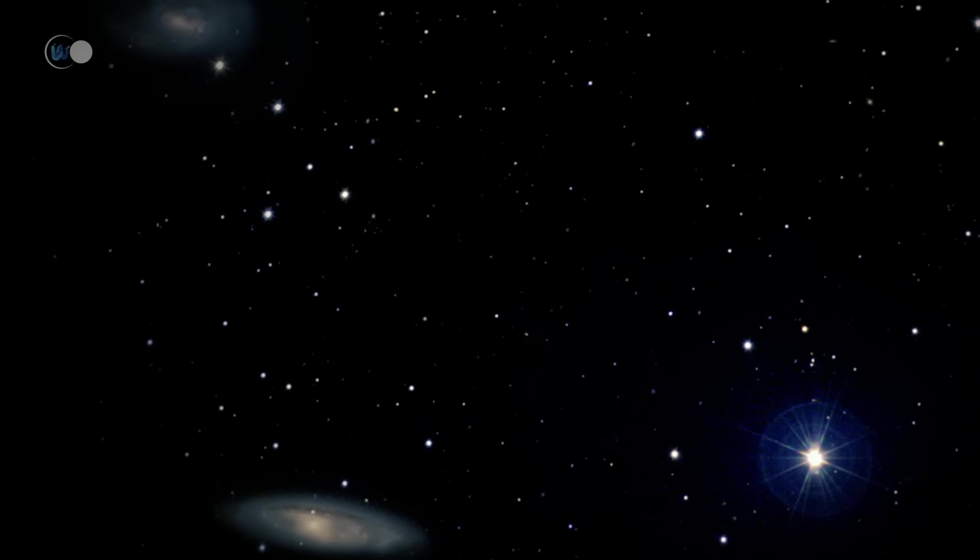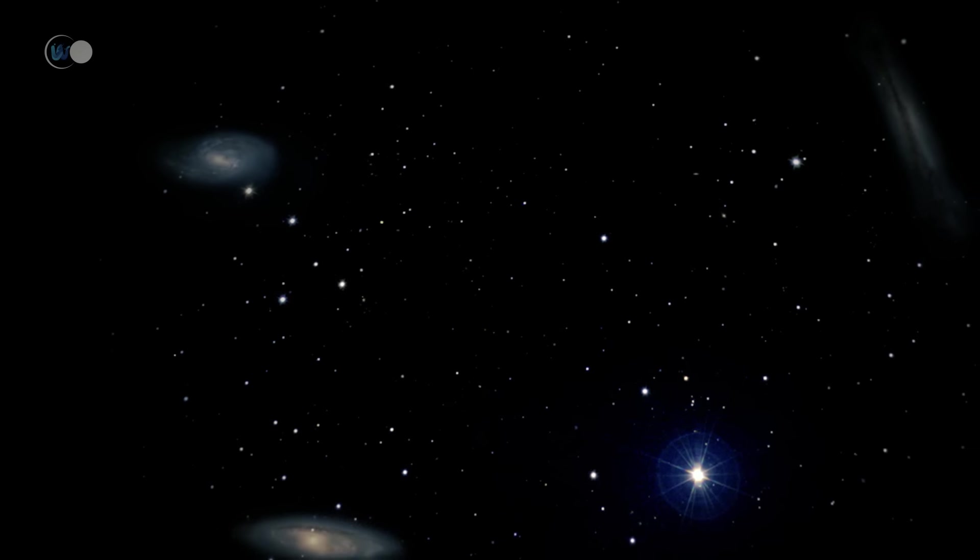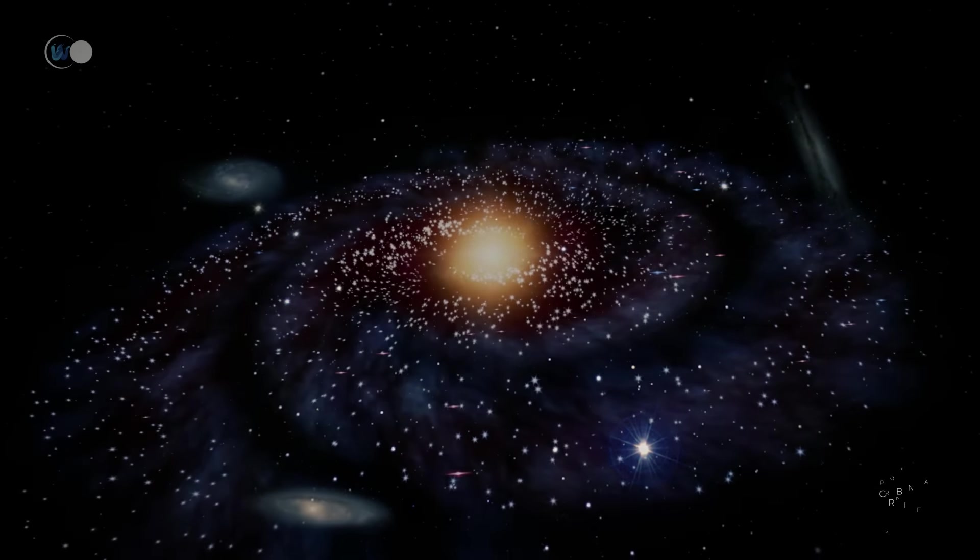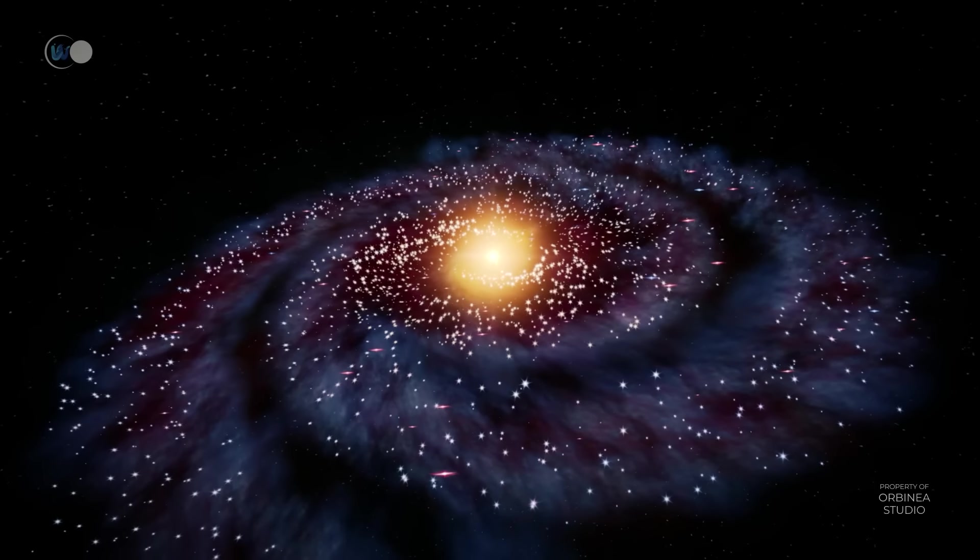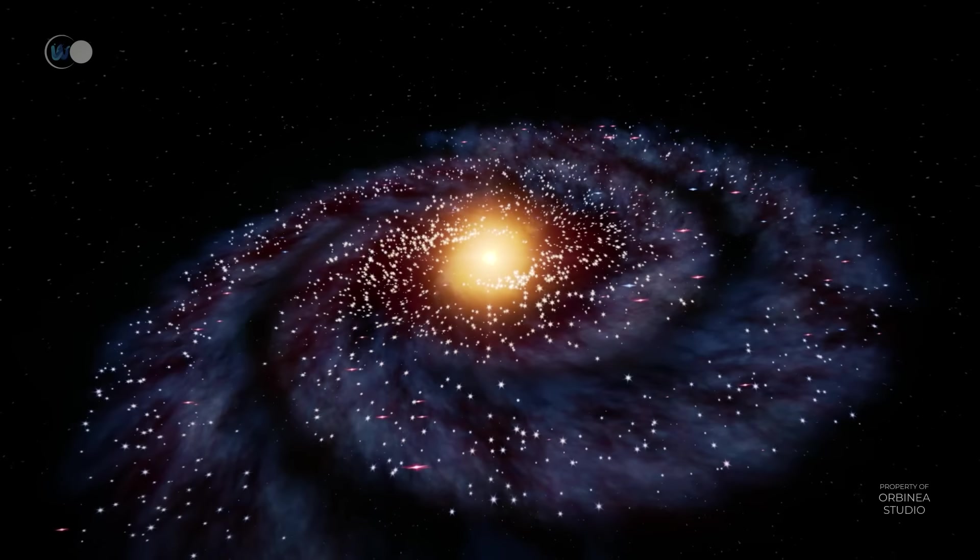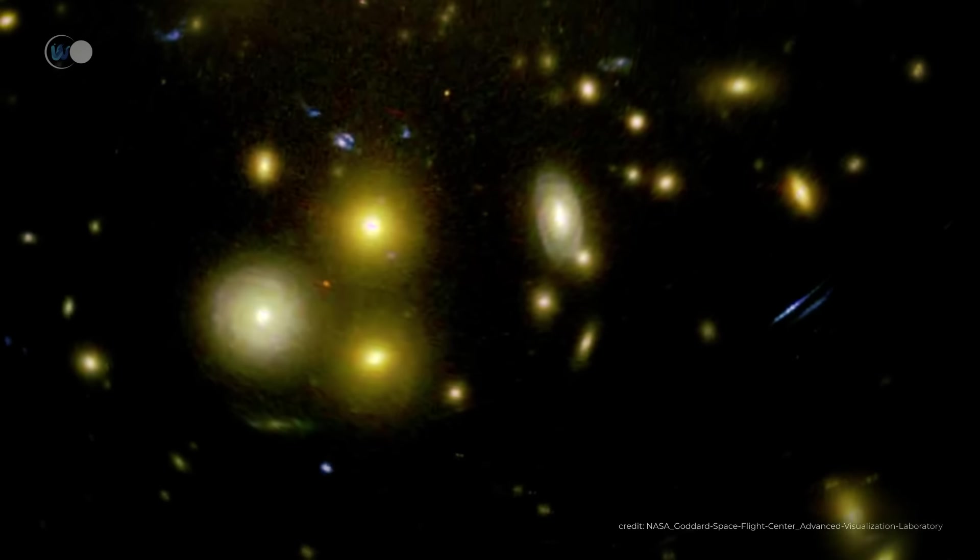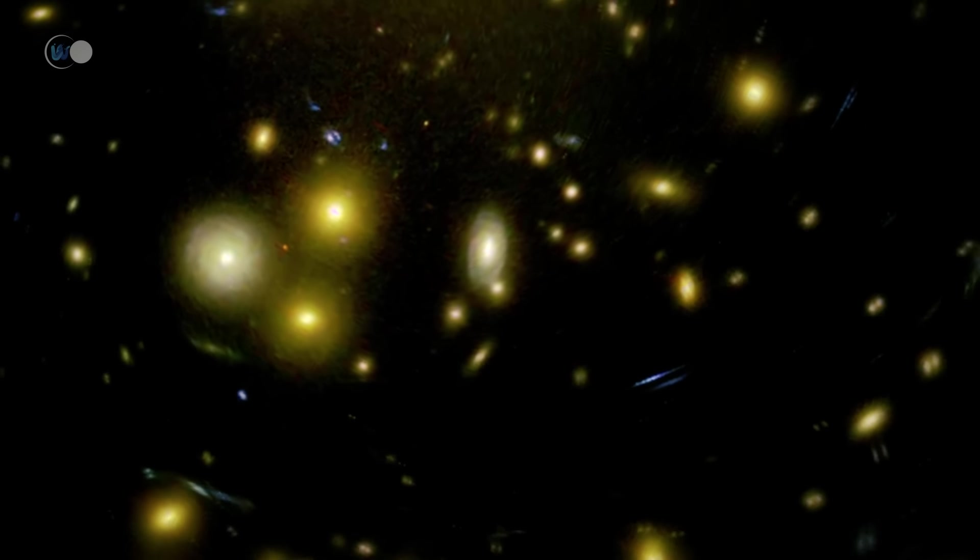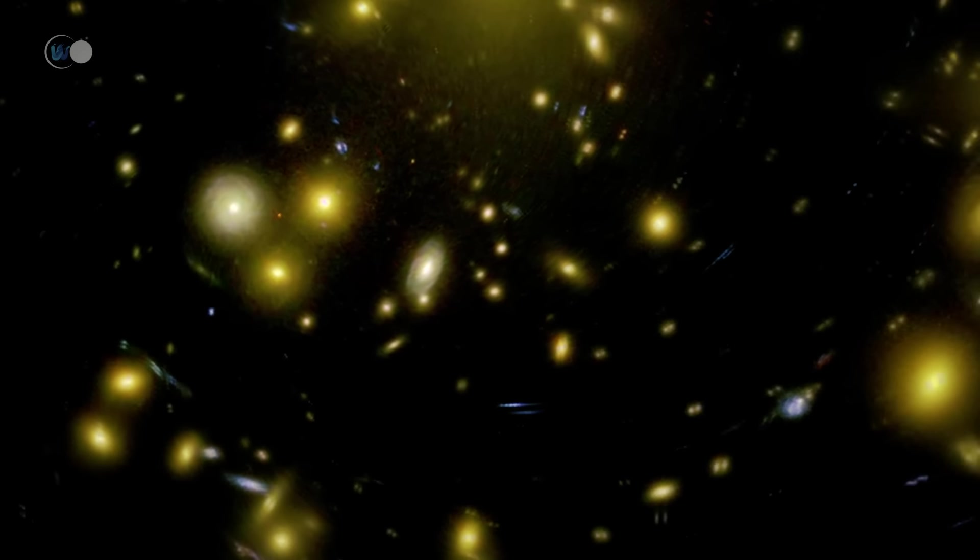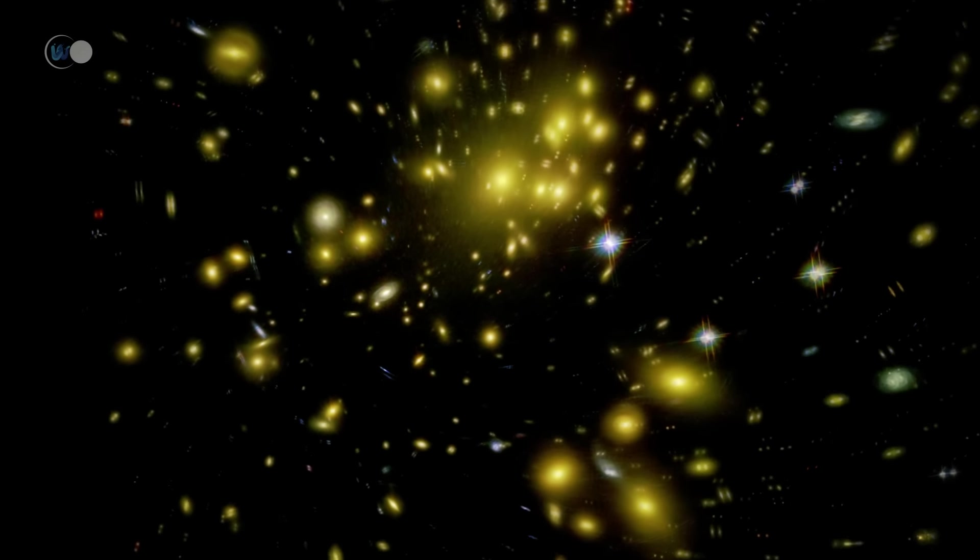One of these galaxies is thought to contain over 100 billion stars, as many as our own Milky Way galaxy. It took our own galaxy 13.8 billion years to form this many stars, while this young galaxy would have done the same in just 700 million years, 20 times faster.